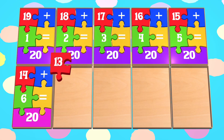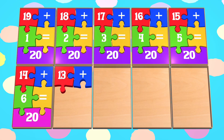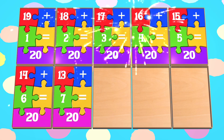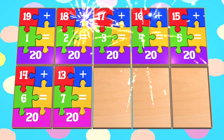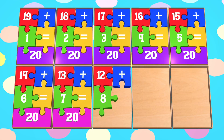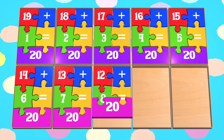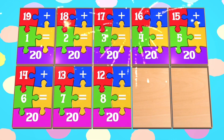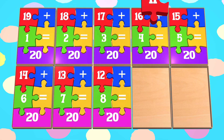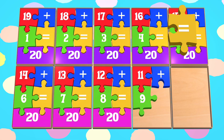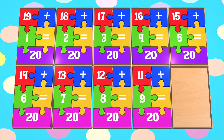13 plus 7 is equal to 20. 12 plus 8 is equal to 20. 11 plus 9 is equal to 20.